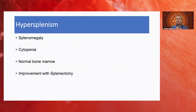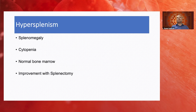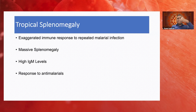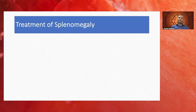Hypersplenism is the clinical conglomerate of splenomegaly, cytopenias, a normocellular or hypercellular bone marrow, and response to splenectomy. It commonly occurs even when splenomegaly is caused by hairy cell leukemia, myelofibrosis, or chronic liver disease — the enlarged spleen acts as a double agent, causing sequestration beyond its hematopoietic role. Tropical splenomegaly, common in malaria-endemic India, is an exaggerated immune response to repeated malaria infection presenting with massive splenomegaly and high IgM levels. About 40–50% of patients show spleen size reduction over six months of treatment.